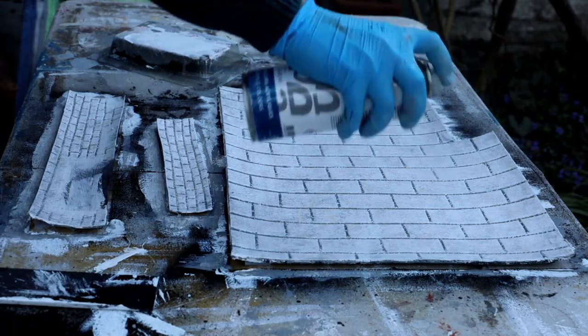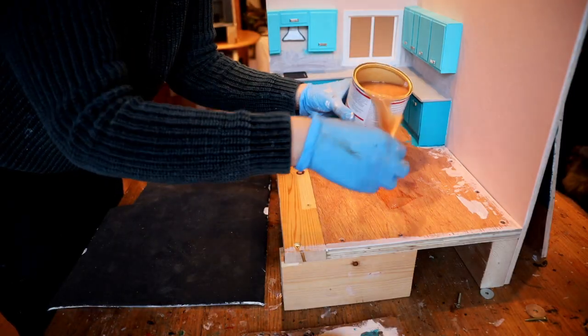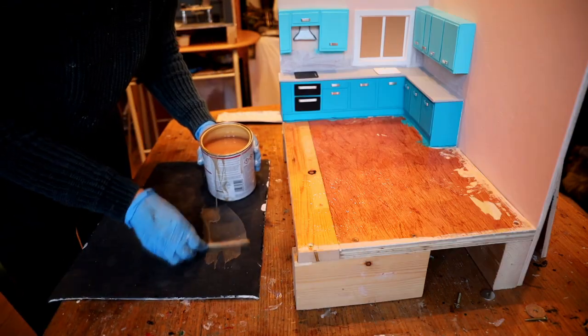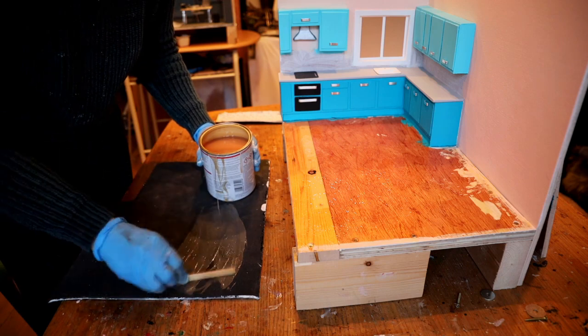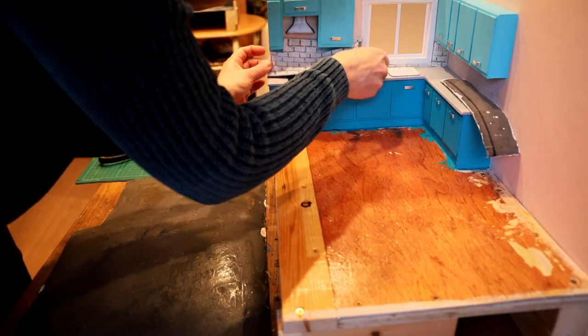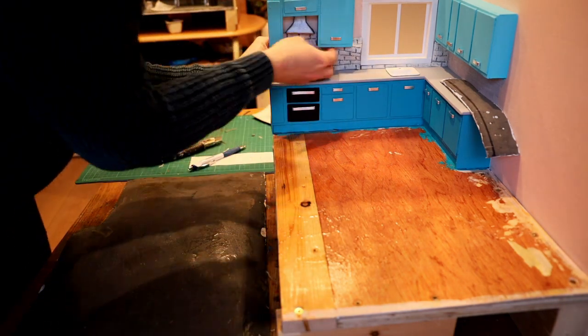Then to glue the tiles I've applied some contact cement or contact adhesive on the plywood and on the foam. You need to leave it to set for approximately 10 minutes until it stops being tacky. So in the meantime I've hot glued the splashback in place. It was a bit of a fight but it ended up going where I wanted it to go.